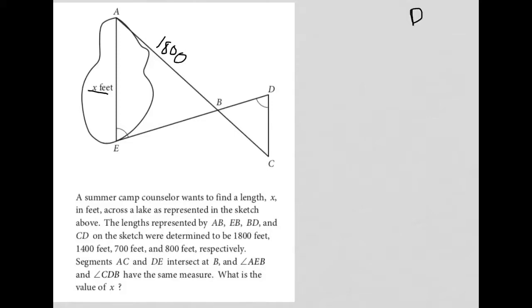1,400 feet, so that's EB, so EB is 1,400. And 700, so that's BD, so label that as 700, and 800, which was CD, so 800 feet.